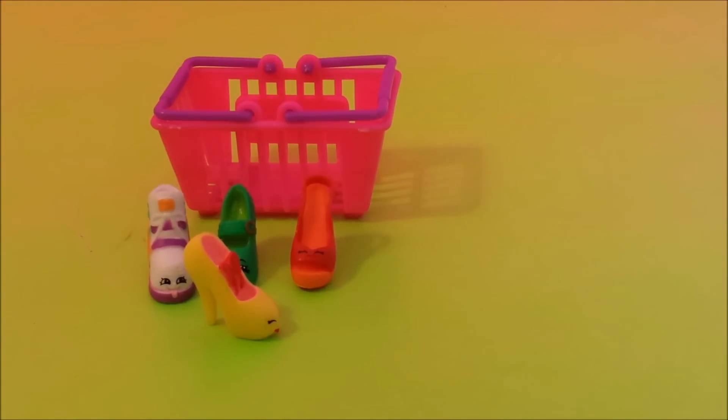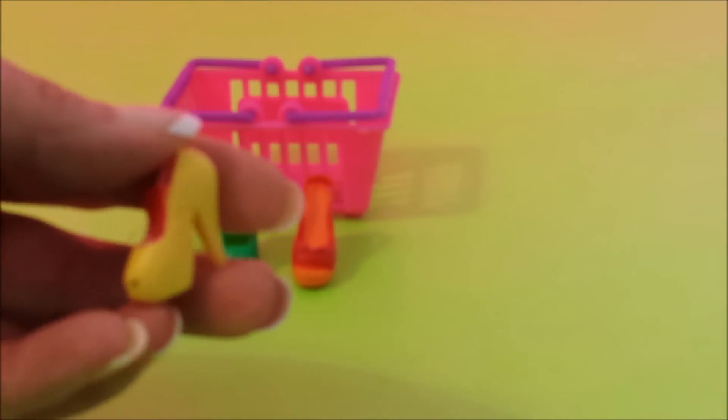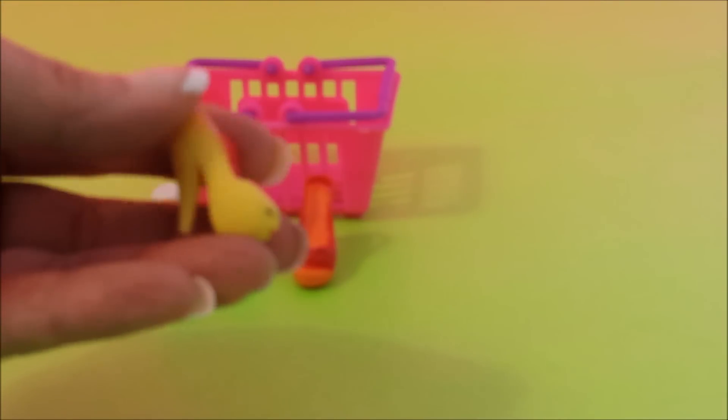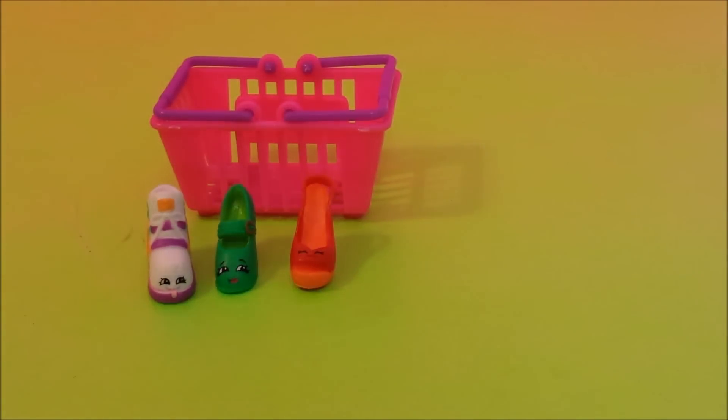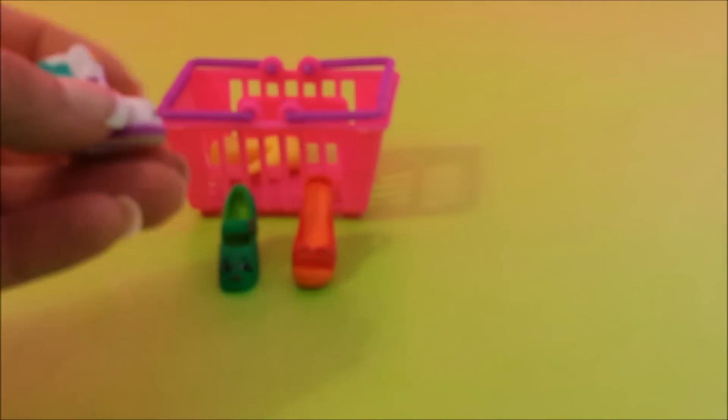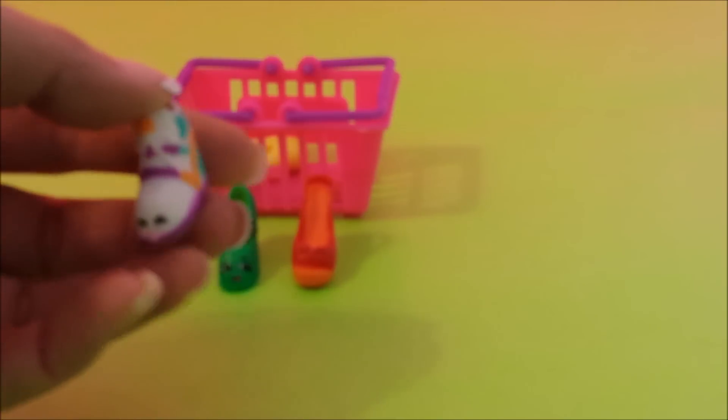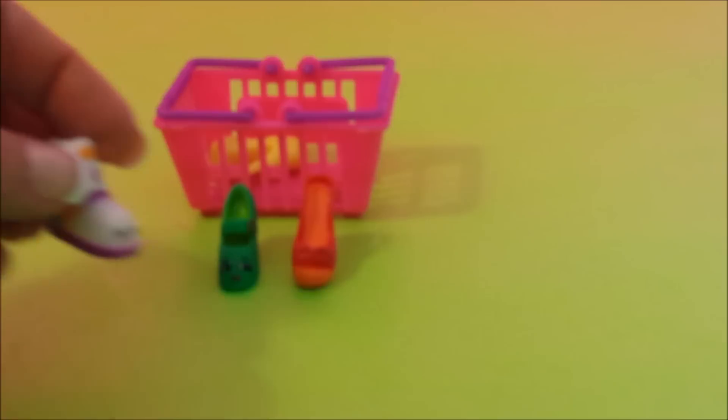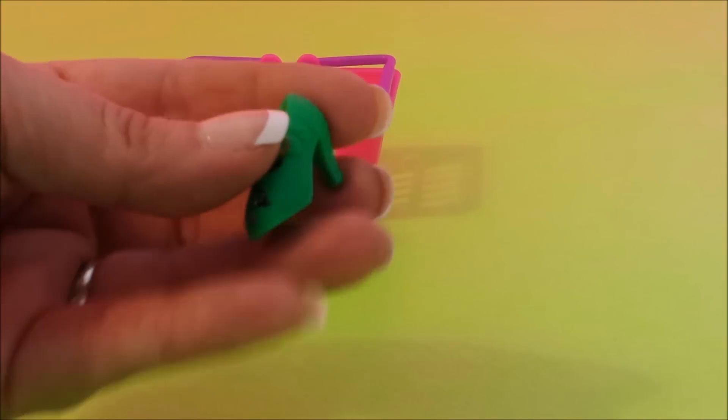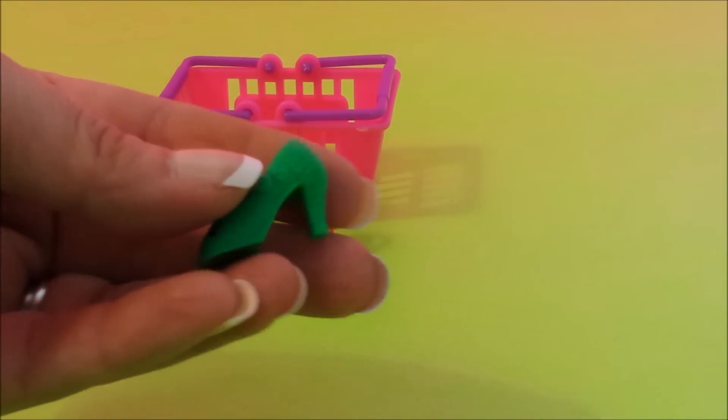Our next shopping bag are shoes, the girl's best friend. The first Shopkin we got out of the shoe category is Promi and Promi is a common. She's still super cute even though she's a common. Our next shoe is Sneaky Wedge and this one is a common as well. Our next shoe we have is called Heels. Heels is a common also. All of the shoes that we got I believe are commons.